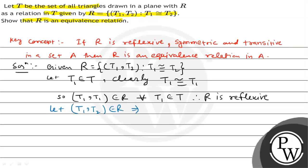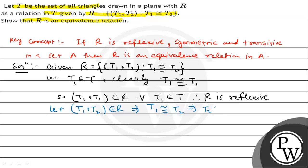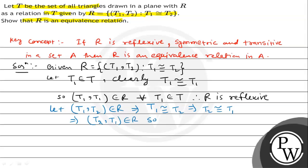Let (t1, t2) belong to R. This implies t1 is congruent to t2, hence t2 is also congruent to t1. Therefore (t2, t1) belongs to R. So R is symmetric.